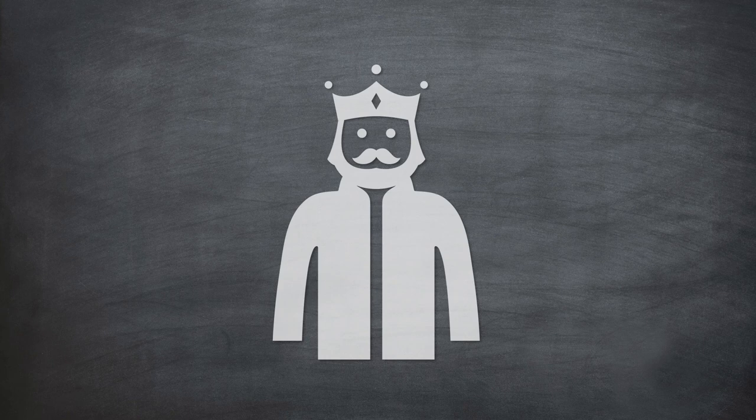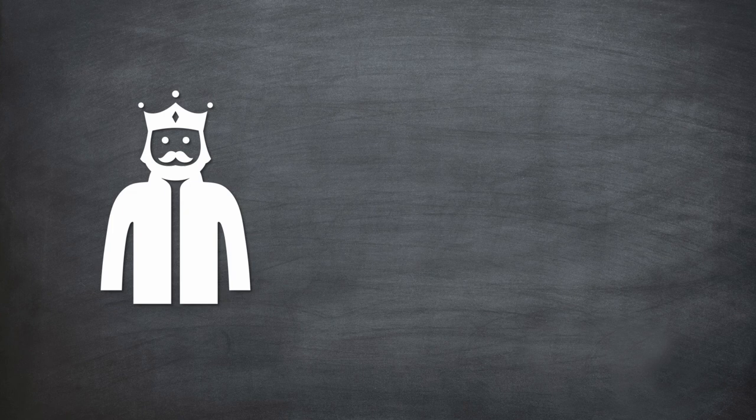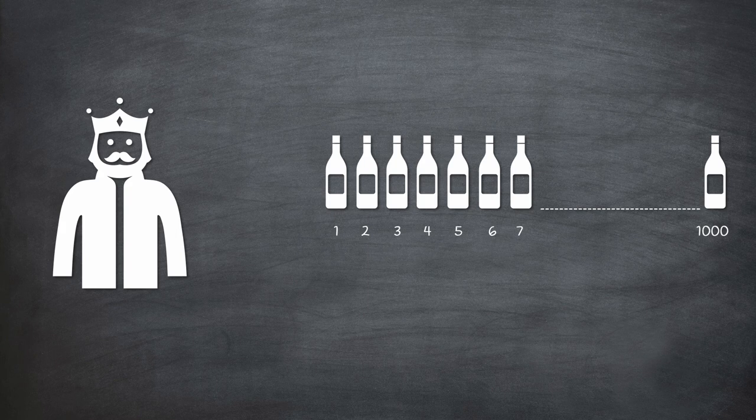There lives a king in a small country. The king is very fond of wine. In fact, he has a collection of a thousand bottles of the finest wine in the world. The king is saving the wine collection for his grand birthday party.